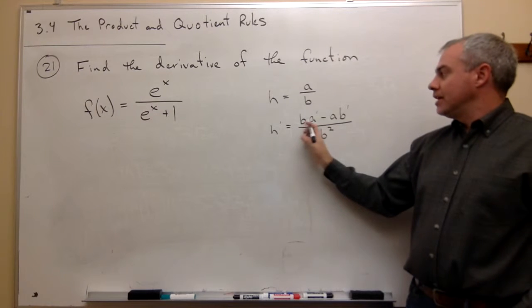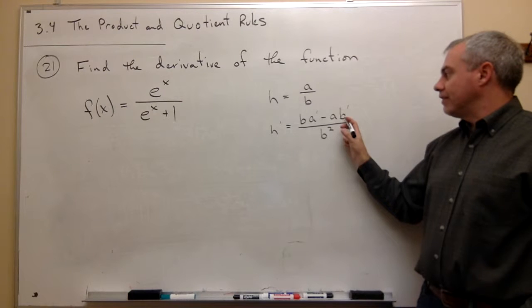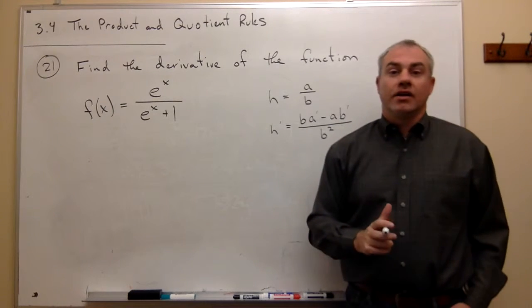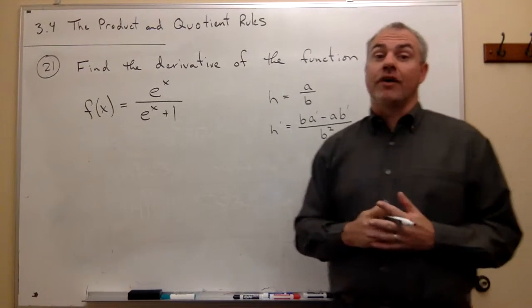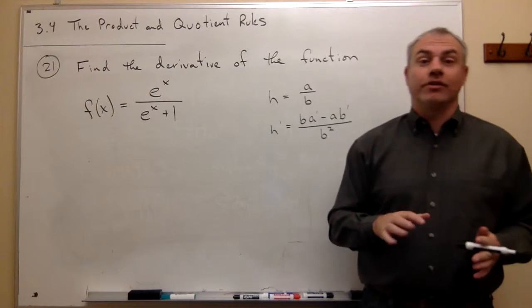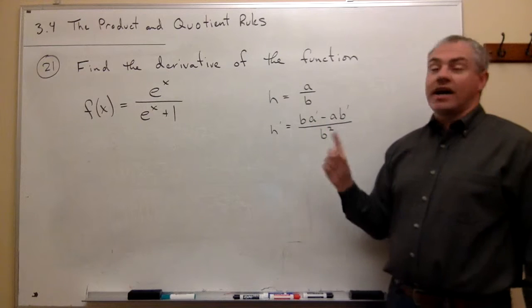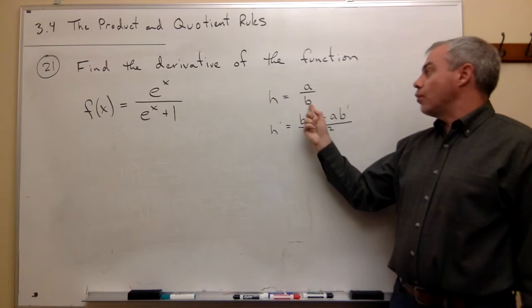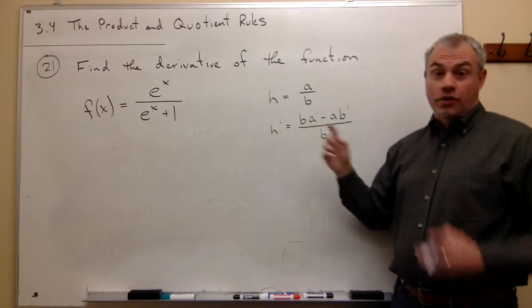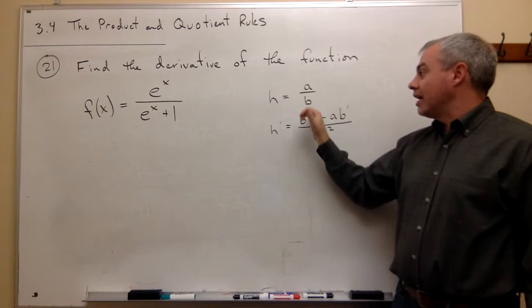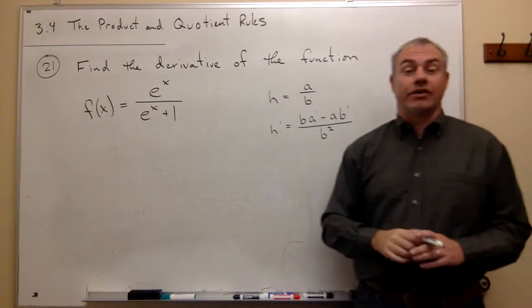It's the bottom times the derivative of the top, minus the top times the derivative of the bottom, divided by the bottom squared. In the product rule, it doesn't really matter which one you take the derivative of first. But in the quotient rule, it absolutely matters — you get it wrong if you take the wrong derivative first. So just write whatever is on the bottom down first, don't change anything, then take the derivative of the top, and you're into the pattern.